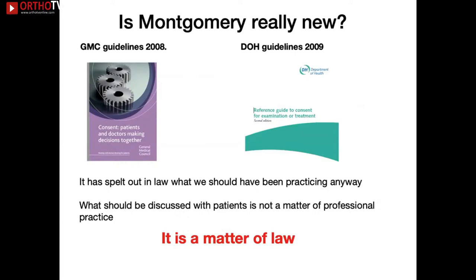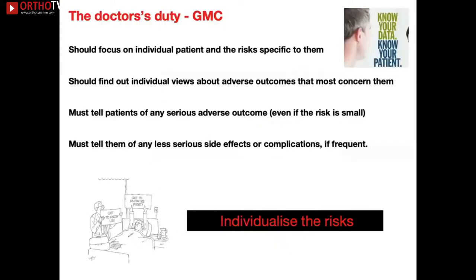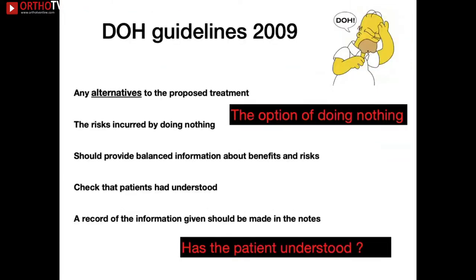The GMC tells us to focus on the patient and their specific risks, find out their concerns and individual views, and inform them of serious adverse outcomes even if the risk is small — for example, the small risk of mortality after a total hip replacement, which is a very grave consequence if it materialises. You must also tell them of less serious but more frequent complications. Risks must be individualised to the patient.